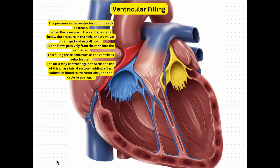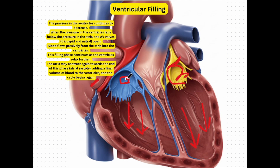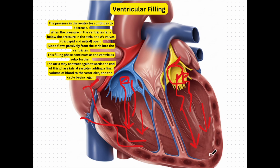Finally, we enter the ventricular filling stage. The pressure in the ventricles continues to fall, and when it drops below the pressure in the atria — the upper chambers — the AV valves, or the tricuspid and mitral valves, begin to open. Blood will then slowly flow from the atria into the ventricles. The filling phase continues as the ventricles relax. The atria may begin contracting toward the end of the phase, adding a final volume of blood and allowing the cycle to repeat. This cycle repeats continuously throughout the day as we constantly need blood flowing throughout our body.